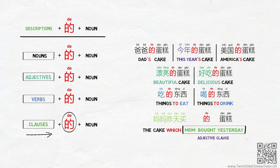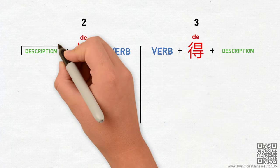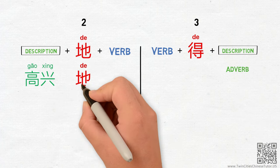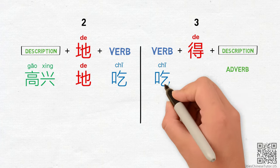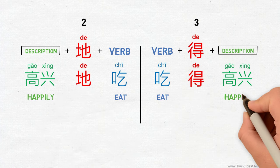Finally, let's move on to the second and third 的. When 的s serve as structural particles, the description for verbs here is often just an adverb. For example, you can say 高兴的吃. You can also say 吃得高兴. They can be roughly translated as happily eat and eat happily.